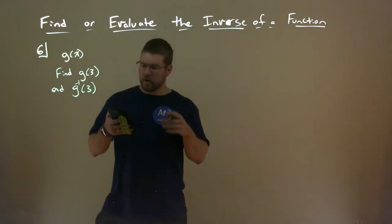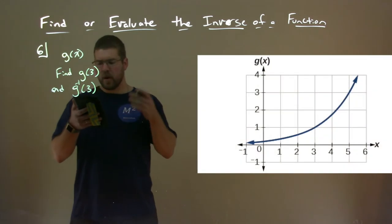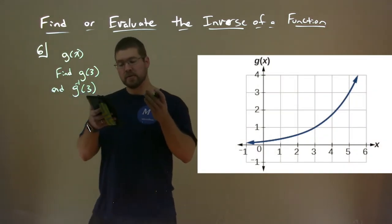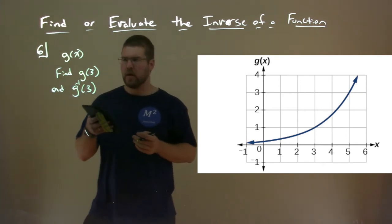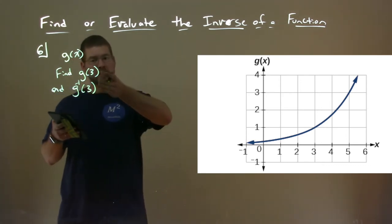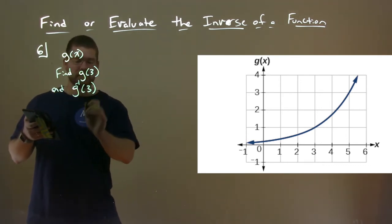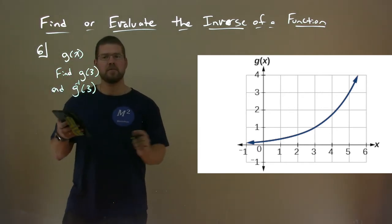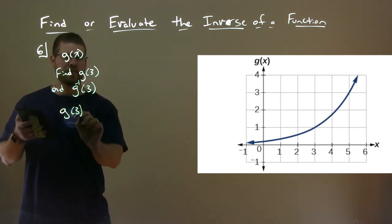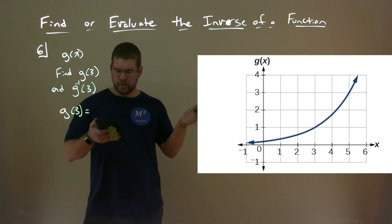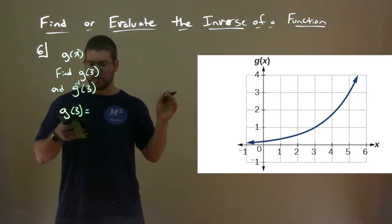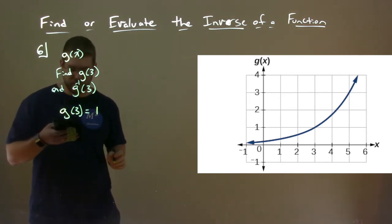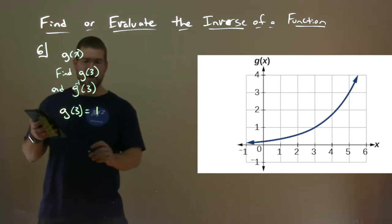Okay, so here we're given this graph, and we're going to evaluate a function and its inverse from a graph at specific points. So we're given g(x), and we want to find what g(3) is and g inverse of 3. What is g(3)? Well, 3 is the input, that's the x value. What's the output there? What's the y value there? We can see that to be just 1. So g(3) equals 1, not too bad.